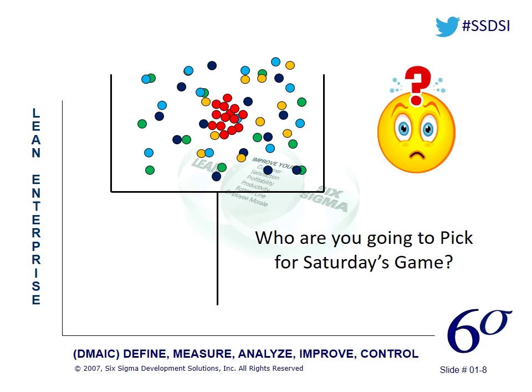Lean doesn't understand this. Lean just says as long as you kick between the goalposts, you're good. Lean doesn't really see what the capability of that kicker is to split the goal. And 'capability' is a key word in Six Sigma. What is my capability to kick in the center of the goal? That fifth kicker's capability is a lot better than the other four. Lean looks at whether you kick through the goalposts or you don't — that's the difference between Lean and Six Sigma.